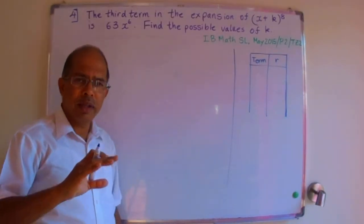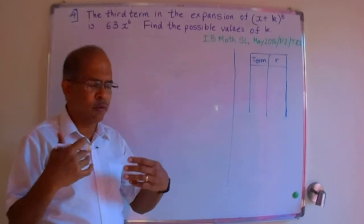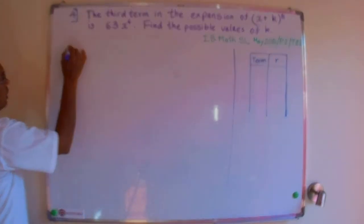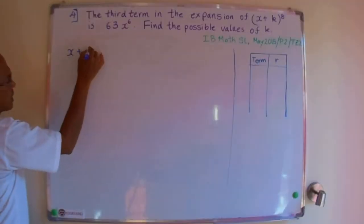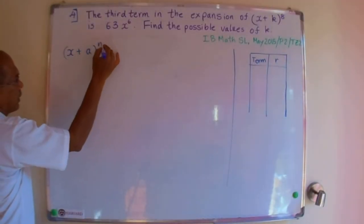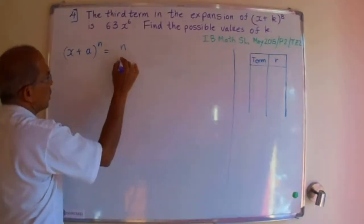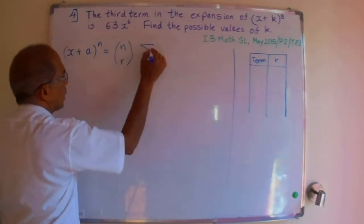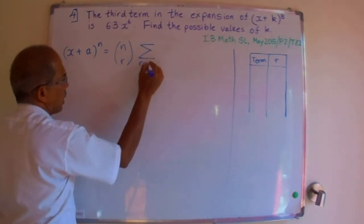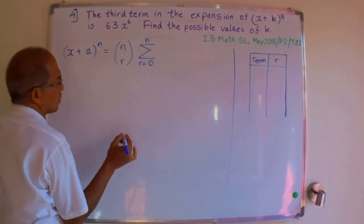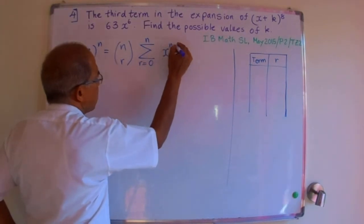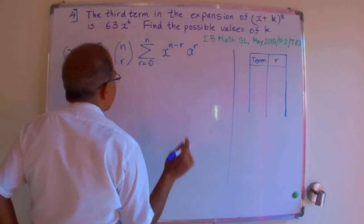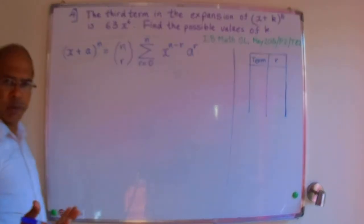Let's write down the expansion of the form x plus a to the power n in binomial fashion. So x plus a to the power n is given by n choose r, Sigma or summation r equals 0 to n, x to the power n minus r, a to the power r. So you can see it's pretty straightforward.